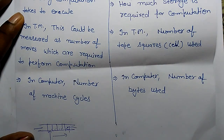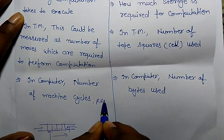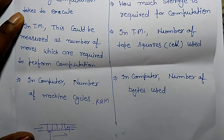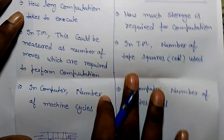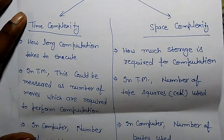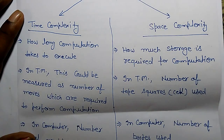In a computer, the number of machine cycles in the RAM — since programs normally run in the RAM — is known as time complexity. So time complexity means how long computation takes to execute.